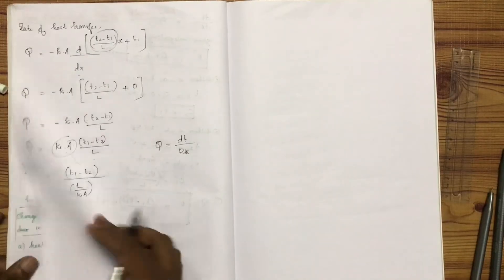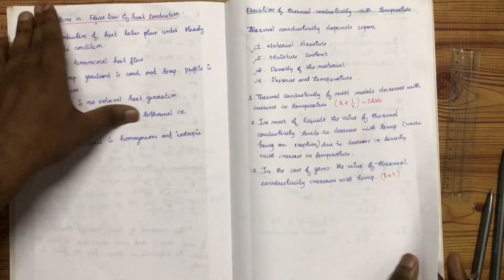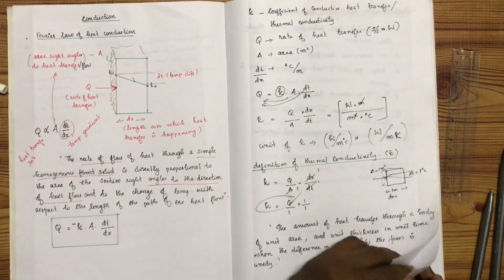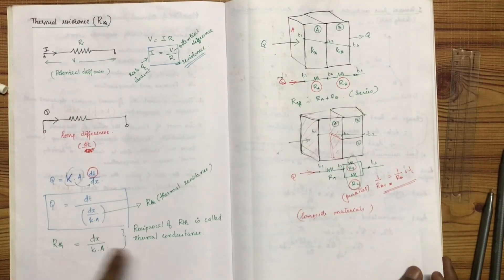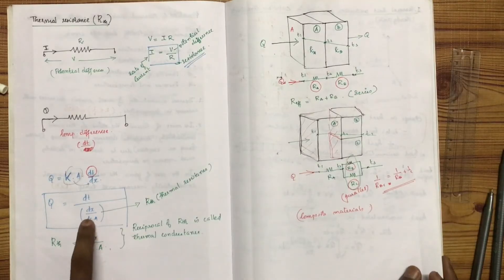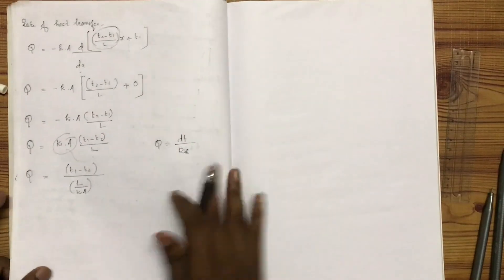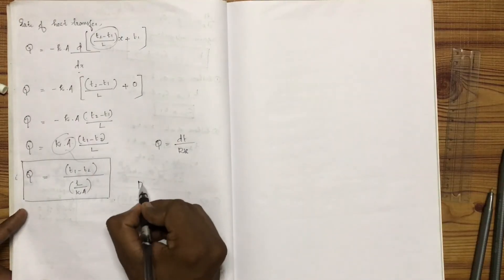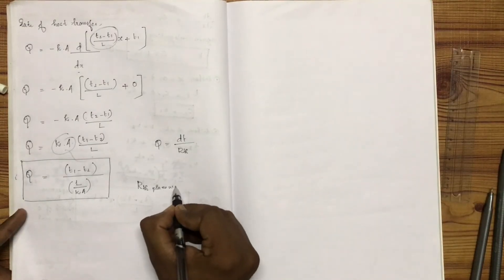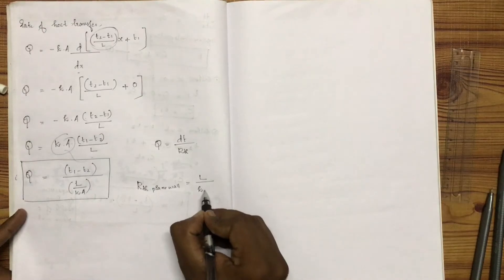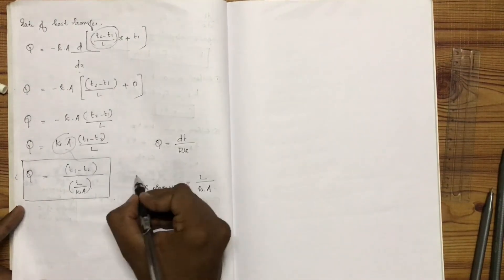Therefore, Q = ΔT / (thermal resistance). The conductive thermal resistance of a plane wall is given by R = L / (k·A), where L is the thickness, k is the thermal conductivity, and A is the cross-sectional area.